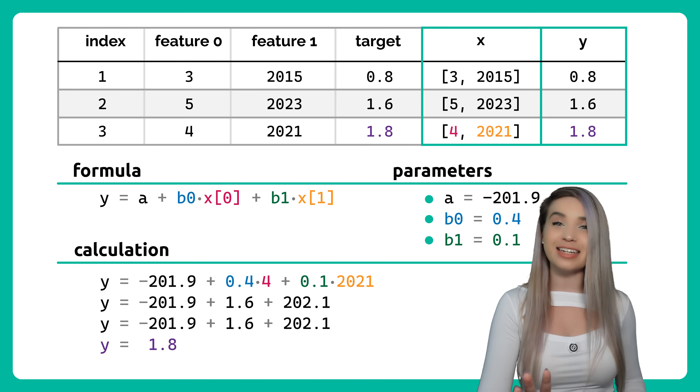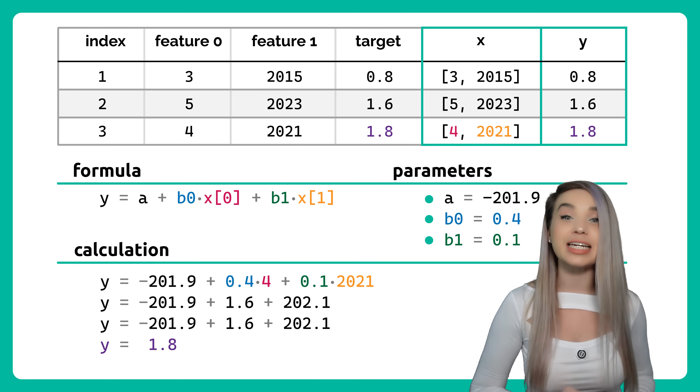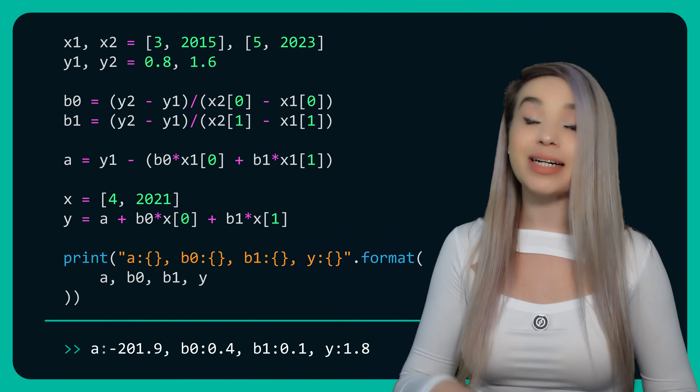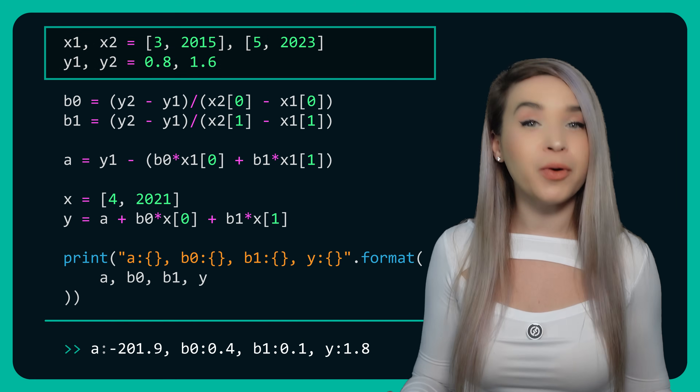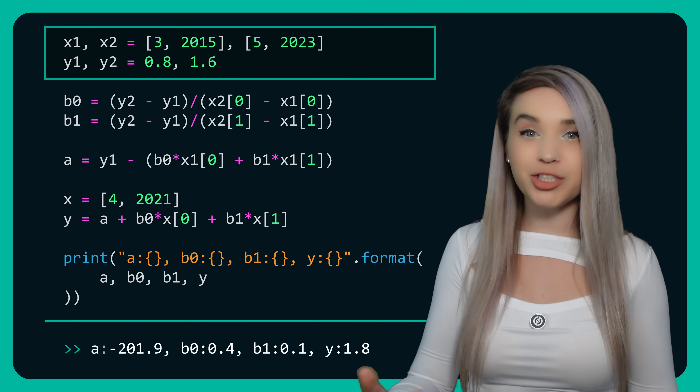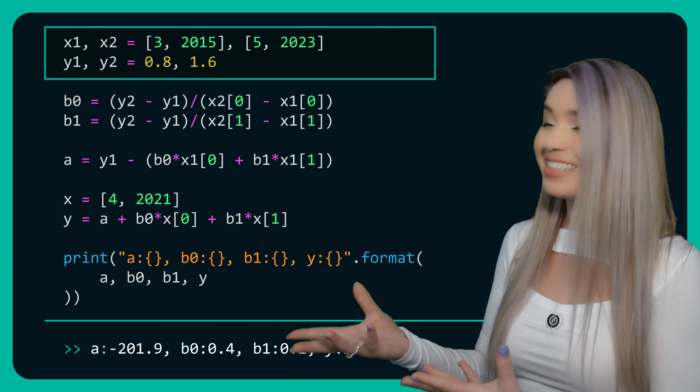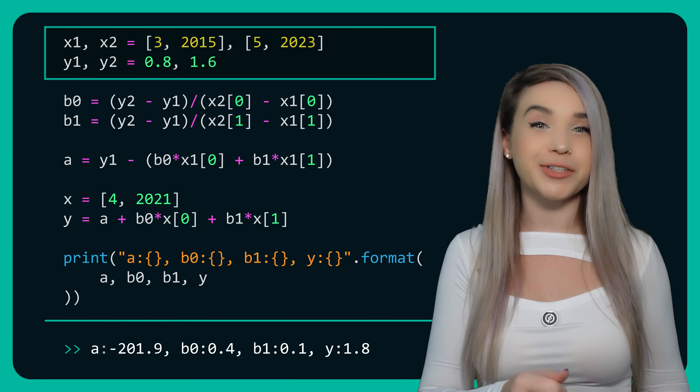Now let's quickly see what it looks like in code, where we have two points each with one target and two features.